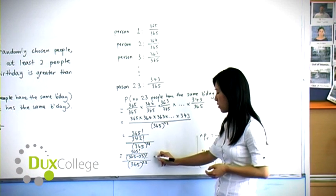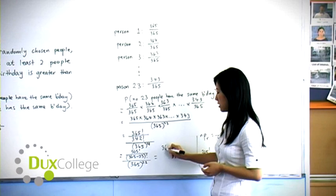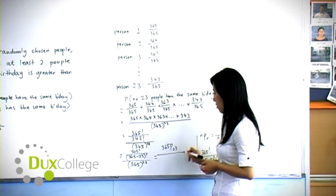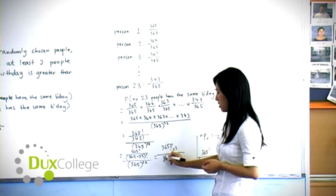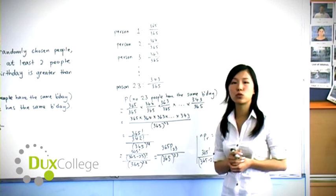So hence this is equal to 365P23 over 365 to the power of 23.